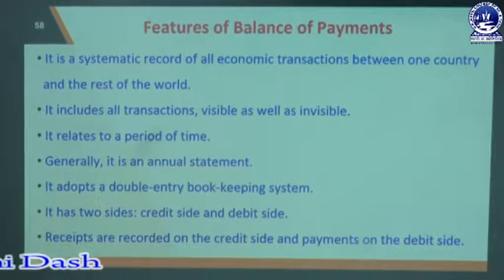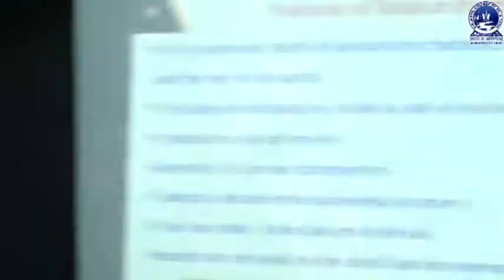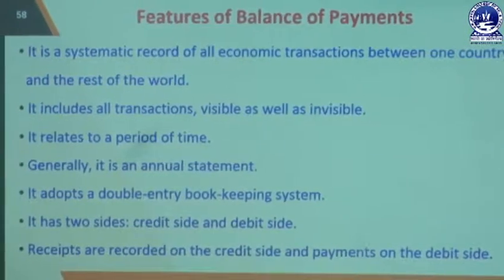Balance of Payment adapts a double entry bookkeeping system. Every entry has a corresponding another entry — every debit transaction has a corresponding credit transaction. In Balance of Payment, every debit economic transaction has a corresponding credit transaction in the statement. It has two sides: one is the credit side and another is the debit side. In the debit side we record all payments, and in the credit side we record all receipts of economic transactions.